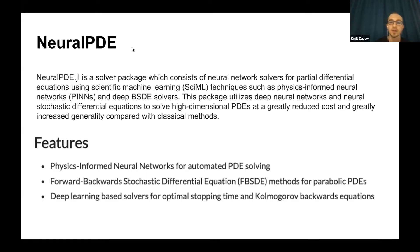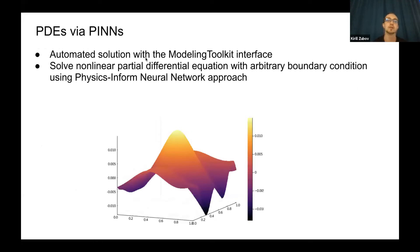NeuralPDE is a package that's solving partial differential equations using scientific machine learning. It has three main parts: physics-informed neural networks with automatic PDE solving, forward-backward stochastic differential equations, and also optimal stopping in Kolmogorov backward problems. But today we concentrate on physics-informed neural networks with automated solution.